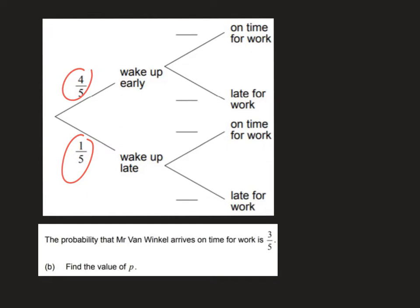early, the probability that he is on time for work is P, and therefore the probability that he is late must be 1 minus P, because these two branches must add up to 1 in total.